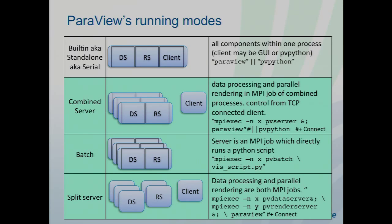There is also a split server mode, where the data server and render server run on different parallel machines. This is almost never efficient. The idea would be to run the data server on Mira and the visualization on Tukey with graphics cards — but the cost of delivering geometry from Mira to Tukey for rendering is almost never recoupable in the faster rendering capabilities of the GPUs. So for really big data, we almost always build in OSMesa and do pure software rendering on the simulation side.